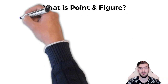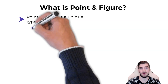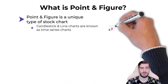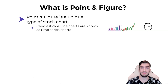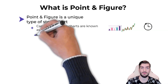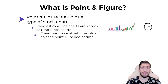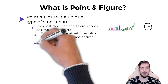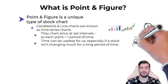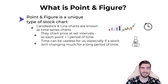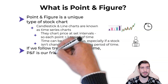What is point and figure? Point and figure is a type of stock chart that is unique compared to types such as candlestick or line charts, which are time series charts. Like a clock ticking with seconds, they measure a stock's price at every interval. This is useful for seeing how price changes over time, but it can be a little useless when a stock's price isn't changing over a long period. If what we're focused on are trends and changes in trends, point and figure is going to be our friend.